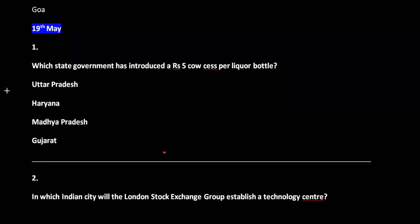Hello friends, welcome! These are the 19th May important current affairs MCQs. The first question: which state government has introduced a ₹5 cause per liquor bottle?